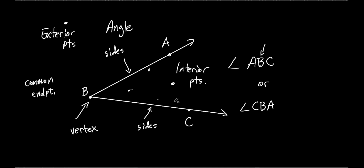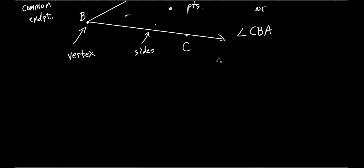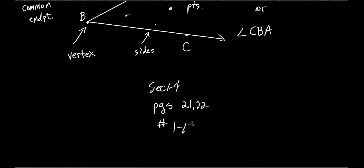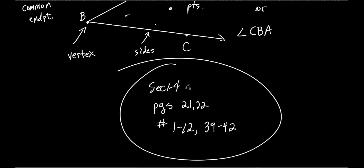We ran out of time today, but you do have homework. It's section 1-4, pages 21 and 22, problems 1 through 12 and 39 through 42. Make sure you do the right section — we skipped 1-3, so do 1-4 only. It's on Runweb, on YouTube, and on the paper I handed out Monday.